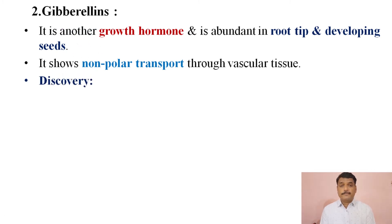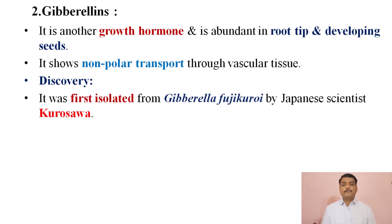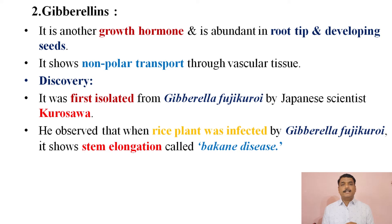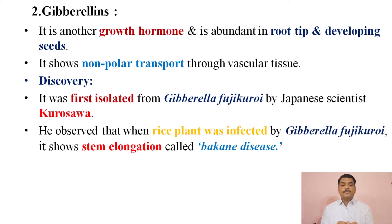As far as the discovery of gibberellins is concerned, it was first isolated from the fungus Gibberella fusikuroi by Japanese scientist Kurosawa. He observed that when rice plants were infected by Gibberella fusikuroi, they showed stem elongation called bakanae disease. He identified that in certain crop fields, infected rice plants showed vigorous growth and stem elongation.